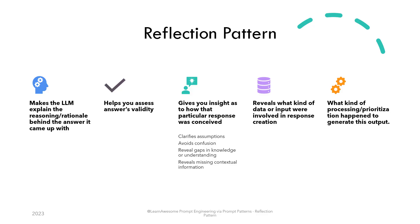This is where a reflection pattern can help. The goal of this pattern is to make the model explain the rationale behind the answer it came up with. This helps you assess the answer's validity and provides insight into how the model came up with this particular response.